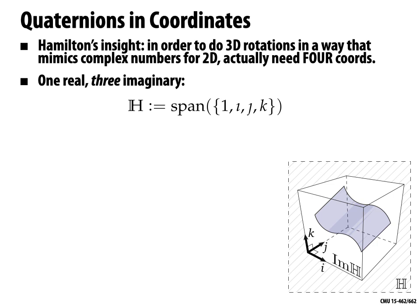Hamilton's basic insight is that in order to do 3D rotations in a way that mimics complex numbers in 2D, we need four coordinates. The right way to think about quaternions is that the last three components — the so-called imaginary components — are used to encode points in three-dimensional space. You can always think about ordinary 3D space as sitting inside this larger four-dimensional space. The quaternions H are the span of four basis vectors — we'll call them 1, i, j, and k. H is for Hamilton.